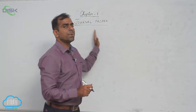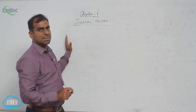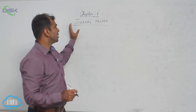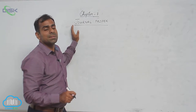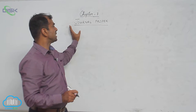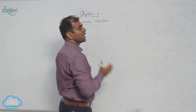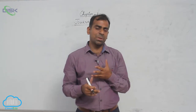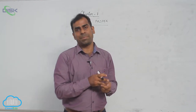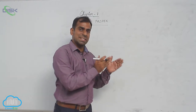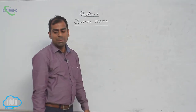Chapter 7: Journal Proper. We have finished preparing some important subsidiary books or special journals. Journal proper is one of the subsidiary books and it is the last of them. Journal proper is to be used when transactions cannot be recorded in a cash book, purchase book, purchase returns book, sales book, sales returns book, bill receivable book, or bill payable book.